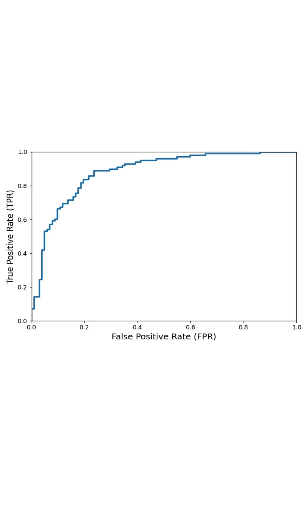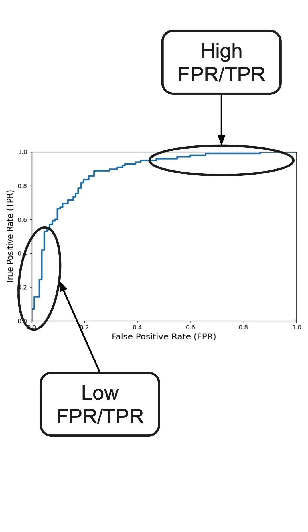Thus, if we want our model to be really certain about the positive samples it finds, we would set a threshold around this area, and if we want it to not miss any positive samples, we would set the threshold around this area.